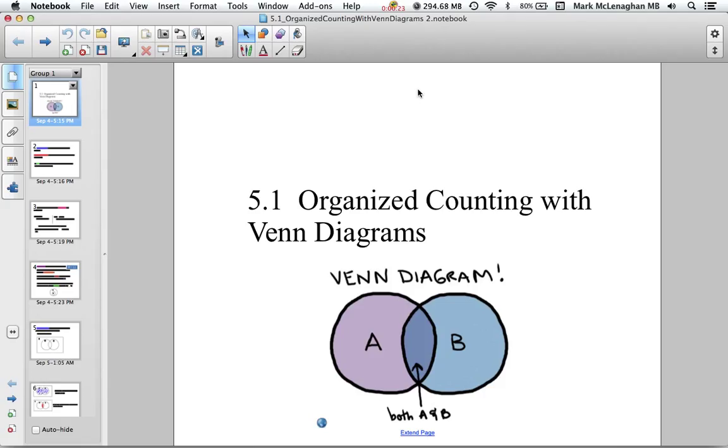We're going to start looking at what we call organized counting with Venn diagrams. A Venn diagram is a way to organize our information, and we'll talk a little bit about set theory as well.